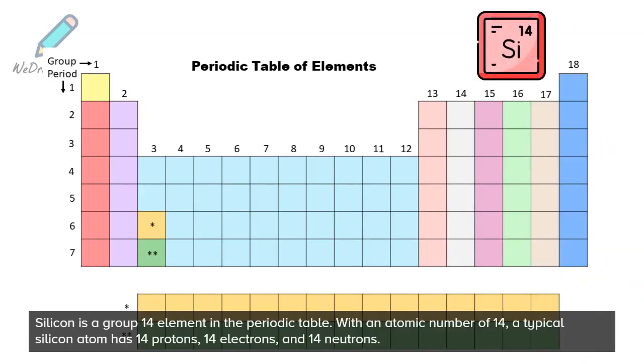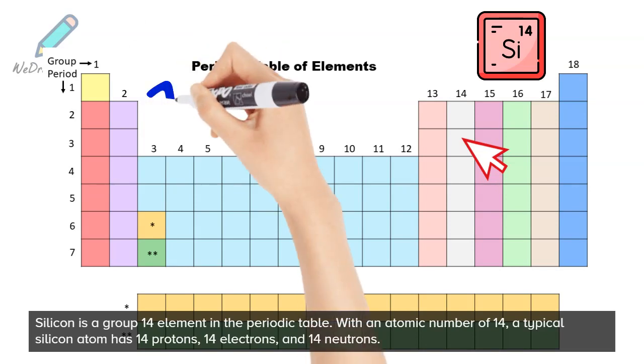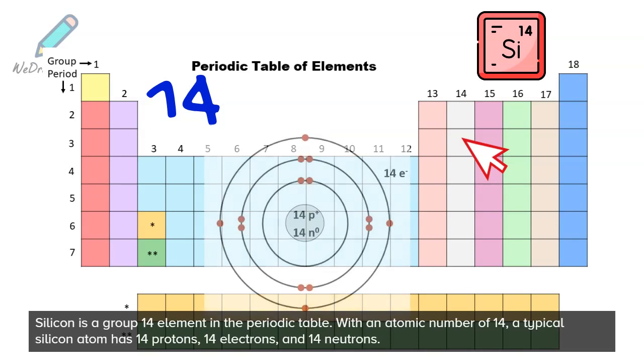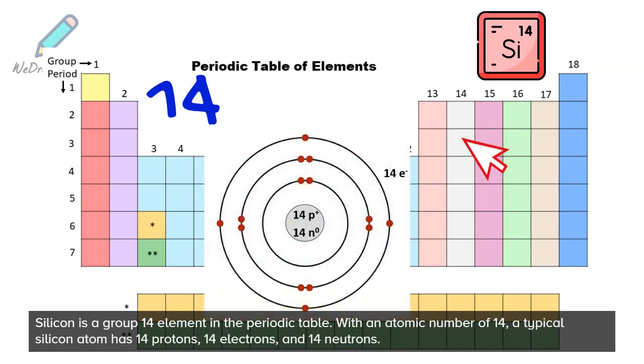Silicon is a group 14 element in the periodic table. With an atomic number of 14, a typical silicon atom has 14 protons, 14 electrons, and 14 neutrons.